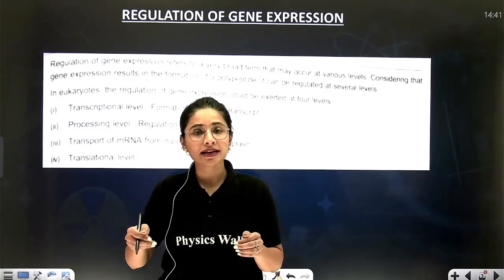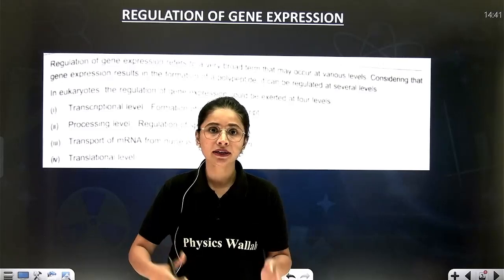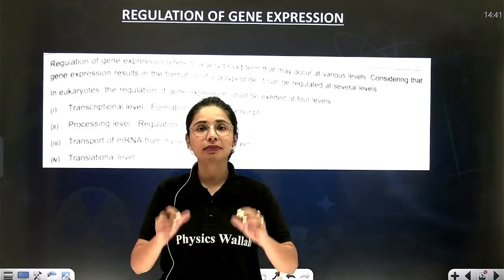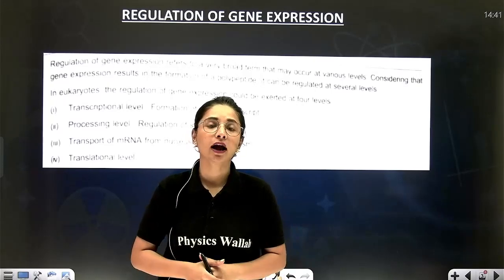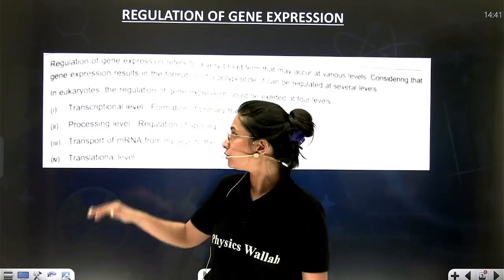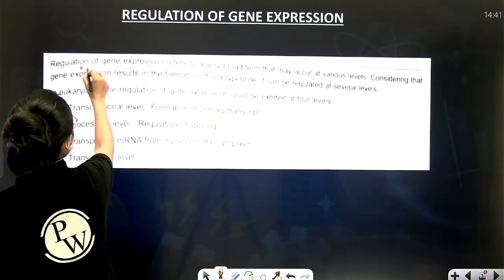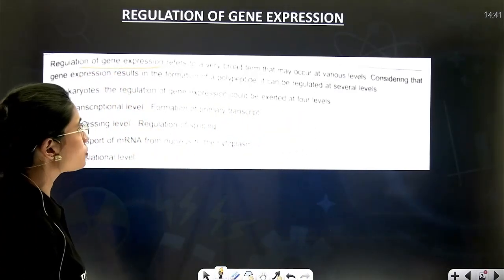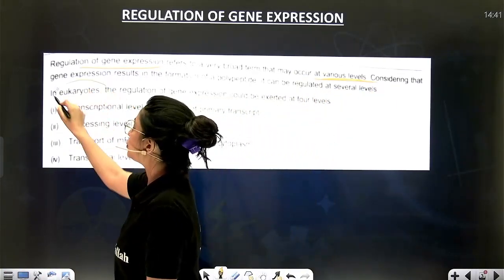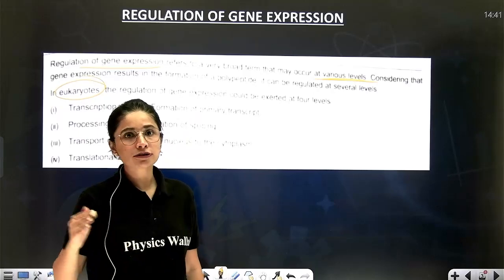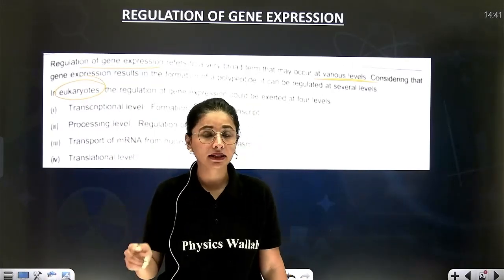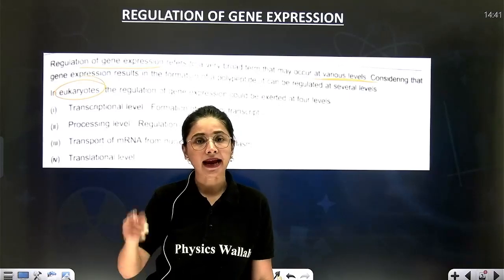The body cells, when required, activate the gene and produce the protein. Whenever it is not required, the genes are made to sleep and they are not allowed to produce protein. In case of eukaryotes, regulation of gene expression refers to a very broad term that may occur at various levels. During the whole process of protein synthesis, we can check the production of protein at four levels.